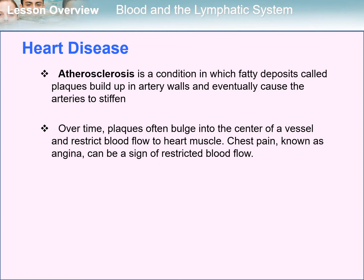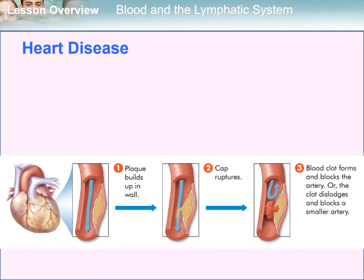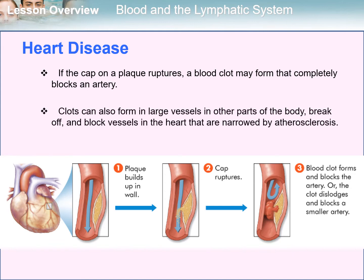Eventually, the heart can be weakened or damaged by oxygen deprivation, leading to a condition called heart failure. This picture shows how plaque builds up in the wall and causes blockage in the artery. If the cap on the plaque ruptures, a blood clot may form that completely blocks an artery. Clots can also form in enlarged vessels in other parts of the body, break off, and block vessels in the heart that are narrowed by atherosclerosis.